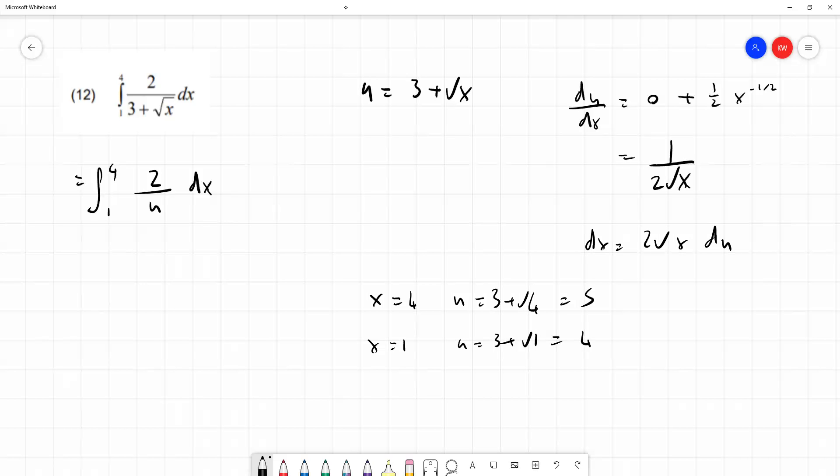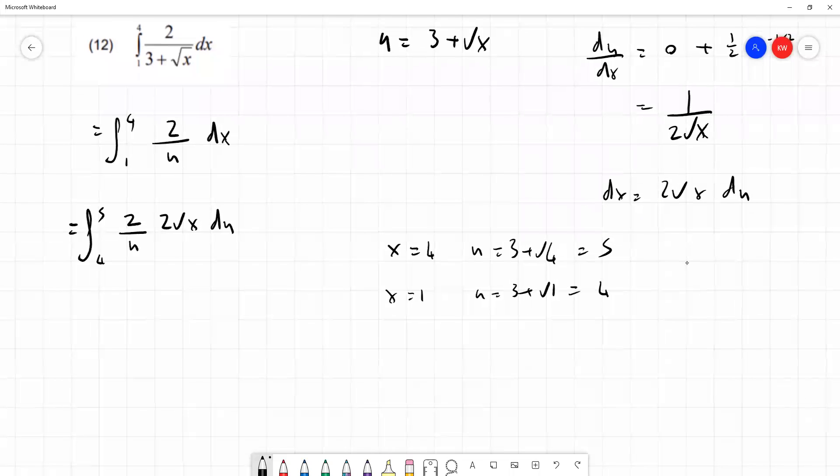So we can put in our substitution for dx and our new limits into our expression. We have integral from 5 to 4, 2 over u times 2 root x du. And at this point, if you're carrying this out normally, we've not encountered one of these problems before. It may be time to think, have we actually got any further forward here? And the answer is actually yes, because we can go back and use our substitution again.